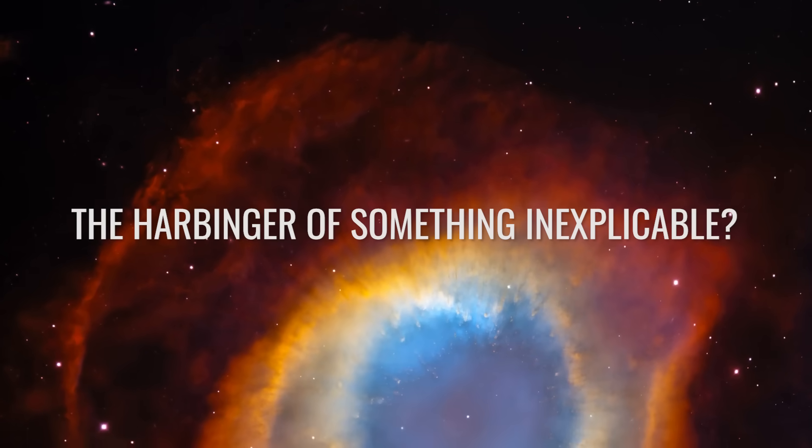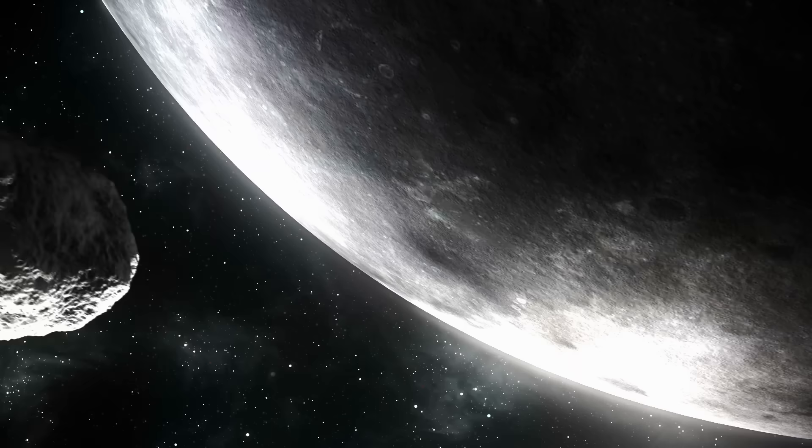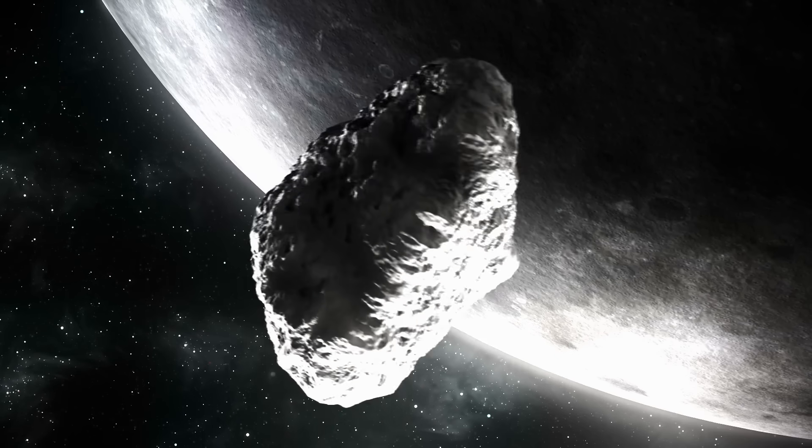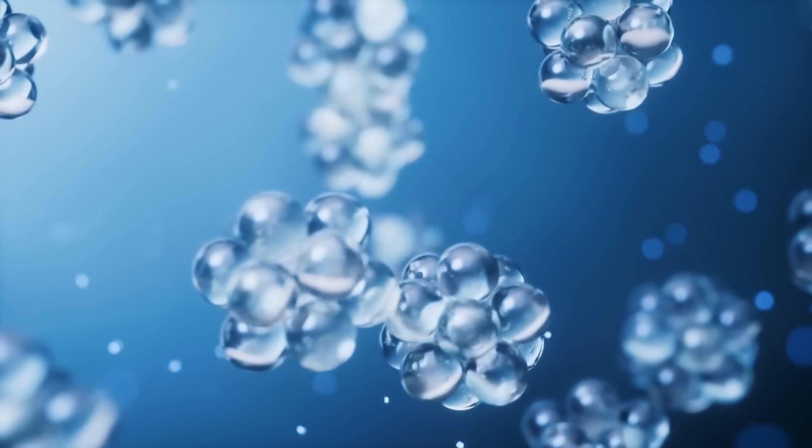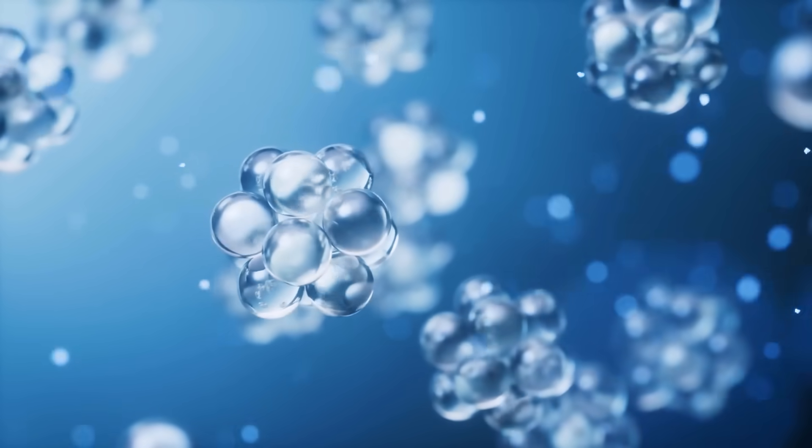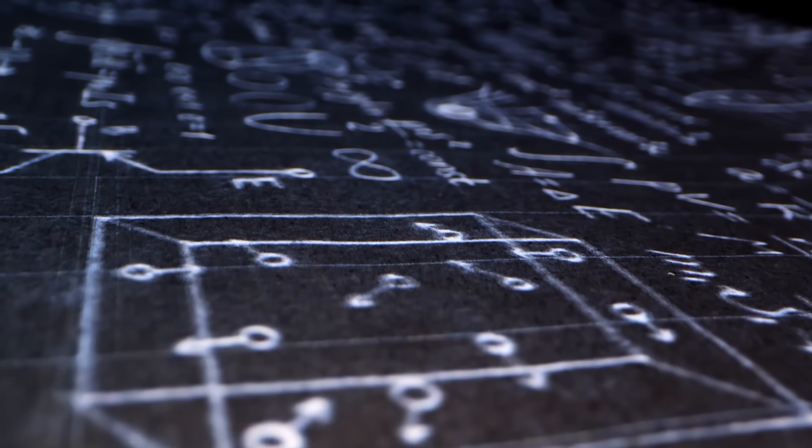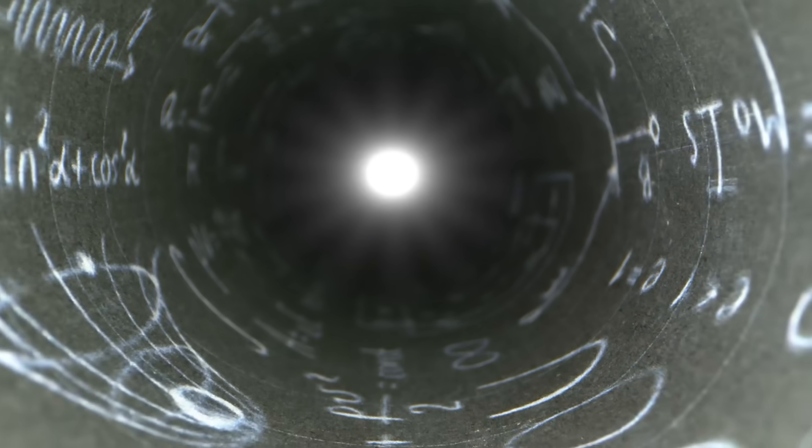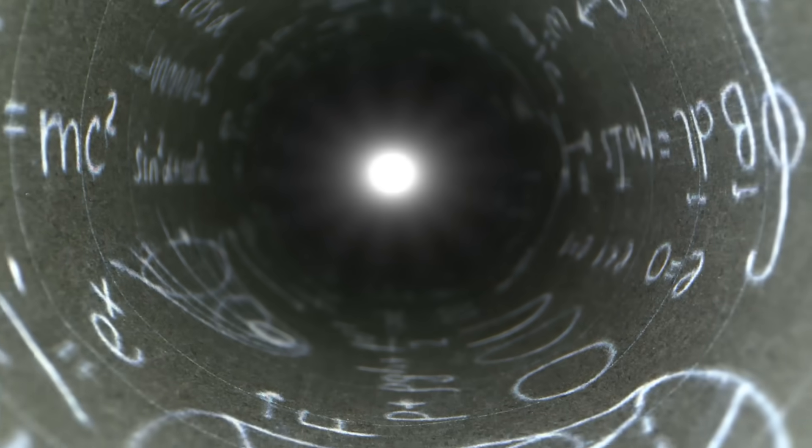The harbinger of something inexplicable? Perhaps 3i Atlas is really just another comet, one that presents our science with a brain teaser due to its chemical uniqueness. Perhaps we see patterns where there are none, and have fears about anything that cannot be explained. But it could also be that this object brings something with it that we are meant to understand.